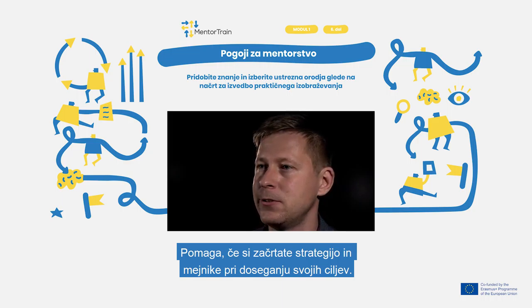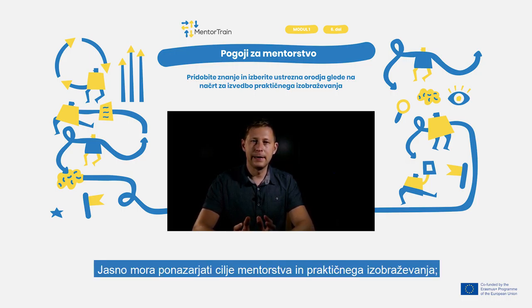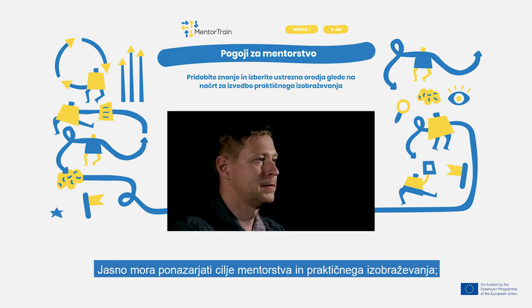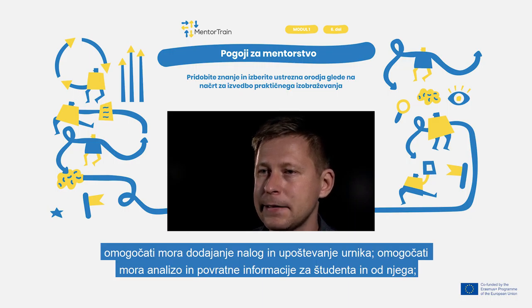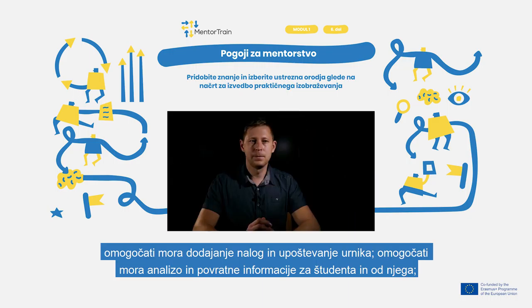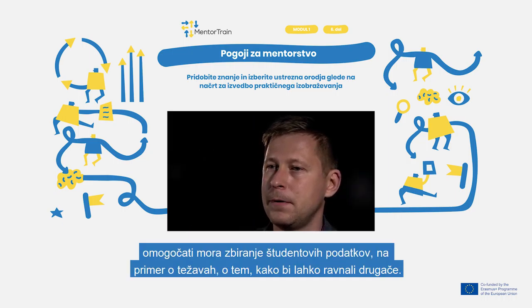What possibilities must a good tool for mentoring have? It should make the objectives of the mentoring and apprenticeship clearly visible. It should offer the possibility to add tasks and follow a time schedule, the possibility to analyze and give feedback to the apprentice and on the apprentice's contribution, and the possibility to collect input from the apprentice.